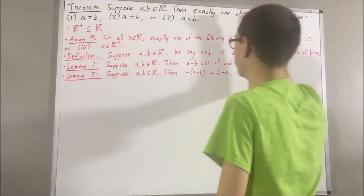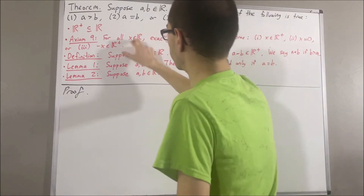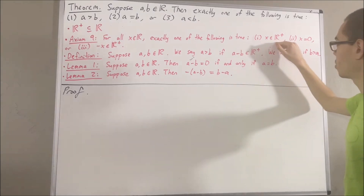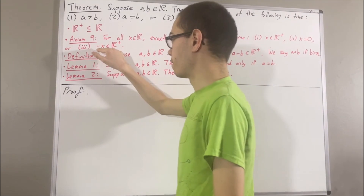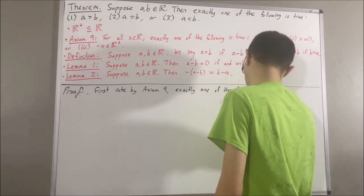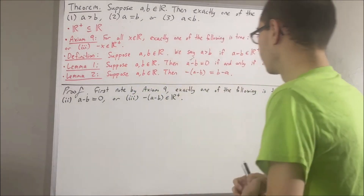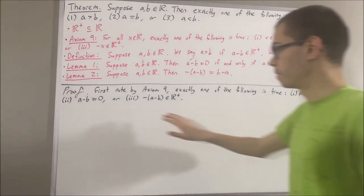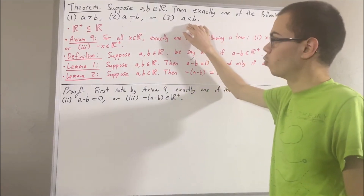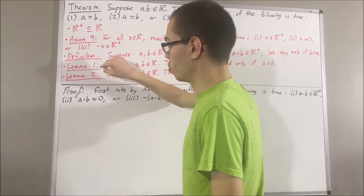Now let's get into proving this theorem. Applying Axiom 9, if we take x to be a minus b, then exactly one of the following is true: a minus b is a positive real number, a minus b is equal to zero, or the negative of a minus b is a positive real number. The idea is we can show that each of these three statements is equivalent to the three target statements, respectively, by applying the definition of greater than, the definition of less than, and our two preliminary results.